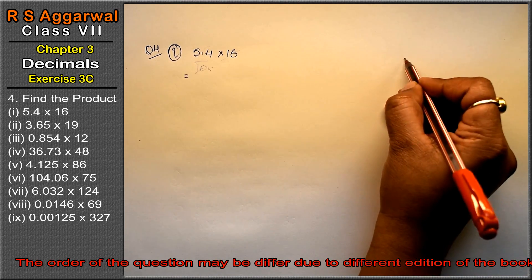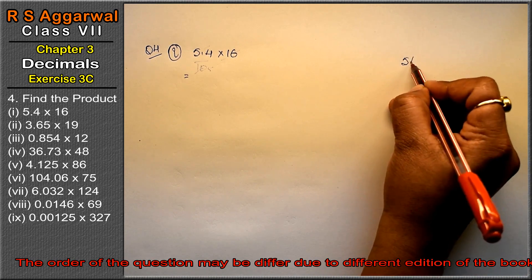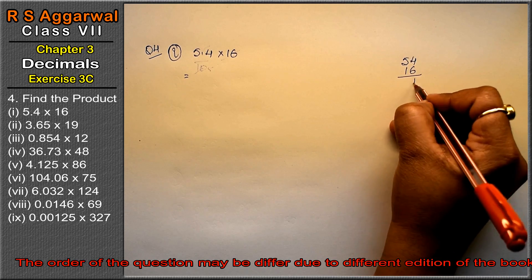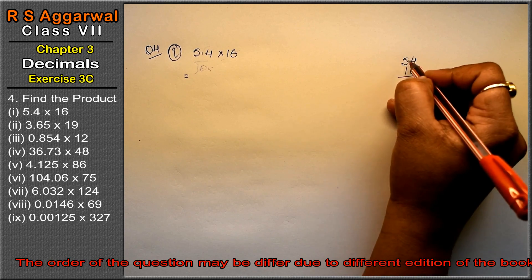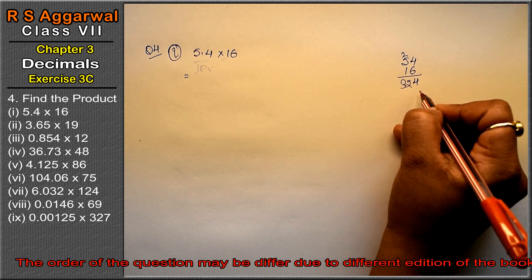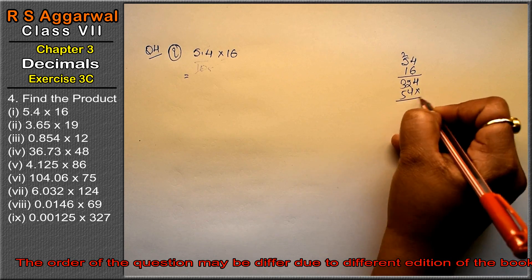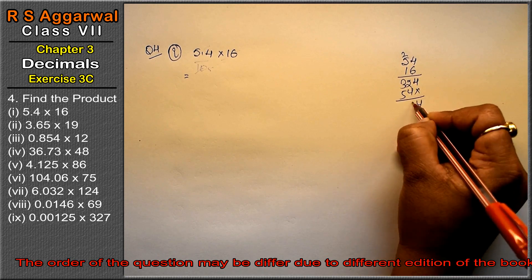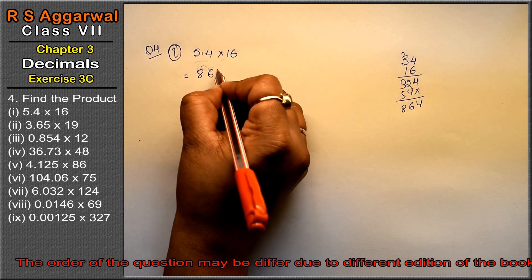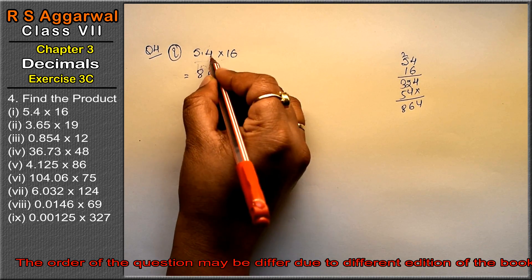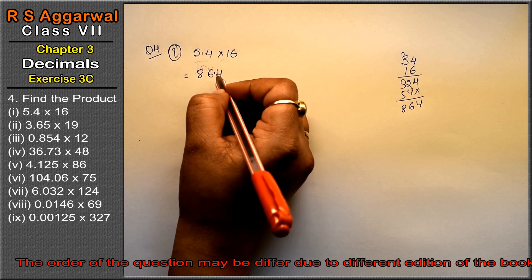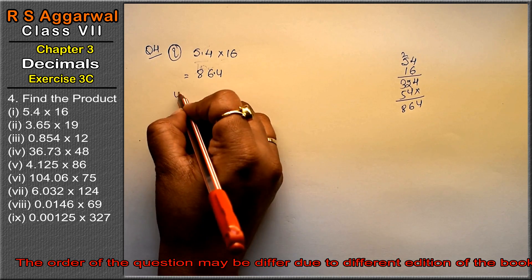So that means 54, without a point — multiply it: 6 × 4 is 24, 6 × 5 is 30, that gives 32. Then 4 × 5 gives us the remaining digits: 4, 6, and 8 — giving 864. Since there was one decimal point in 5.4, we place the point to get 86.4. This is the answer.